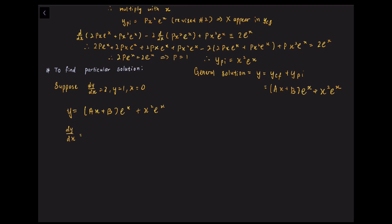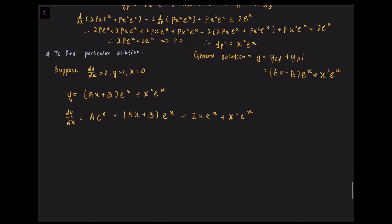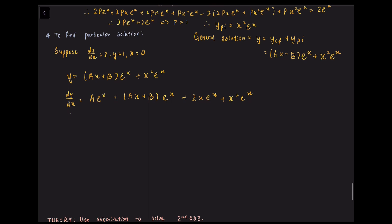Differentiating this equation, we obtain a·eˣ + (ax + b)·eˣ + 2x·eˣ + x²·eˣ. Inserting the boundary conditions into the equation above, we obtain b = 1, a + b = 2, and hence a = 1. So a and b are both 1, and substituting back into our general solution, the particular solution is thus y = (1 + x + x²)·eˣ.